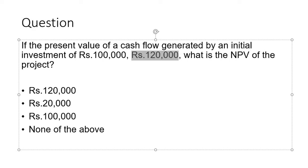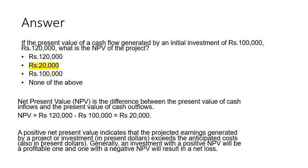Question: If the present value of a cash flow generated by an initial investment of rupees 1 lakh is rupees 1 lakh 20,000, what is the NPV of the project? The answer is 20,000. NPV is the difference between the present value of cash inflows and the present value of cash outflow: 1,20,000 minus 1,00,000 equals 20,000. A positive NPV indicates projected earnings exceed the anticipated cost — the investment is profitable.